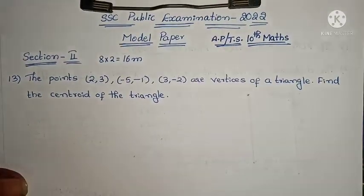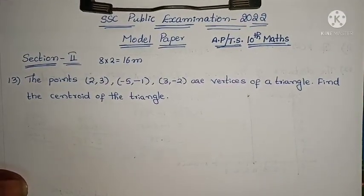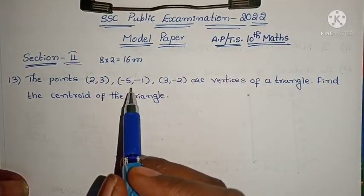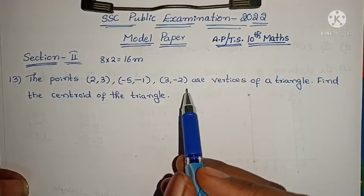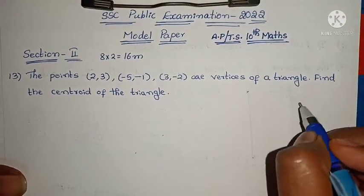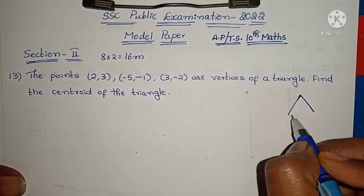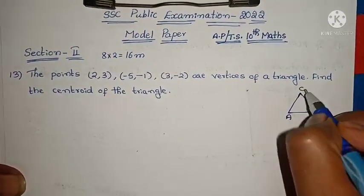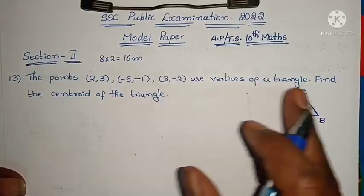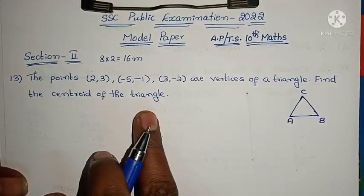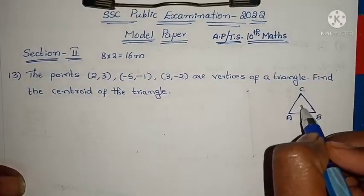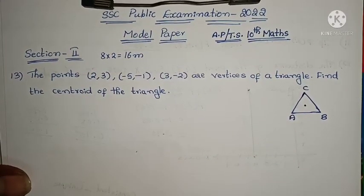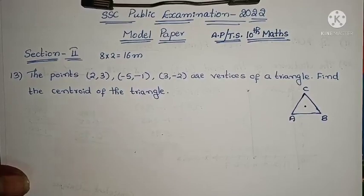The 12th question: the points are (2, 3), (−5, −1), (3, −2) — these are the vertices of a triangle. We have to find the centroid of the triangle. Let us label them A, B, and C. The centroid formula is: x1 + x2 + x3 all divided by 3, and y1 + y2 + y3 all divided by 3.